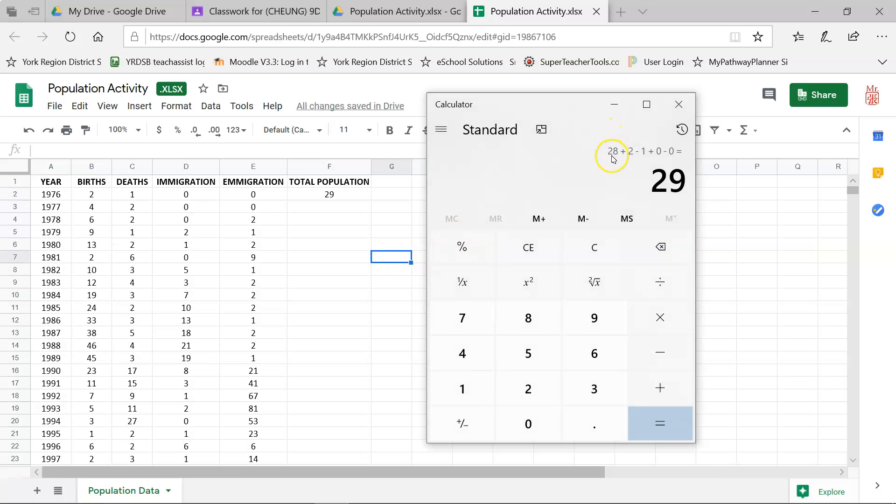Alright, so once again, we started off with 28 reindeer at the end of 1975. Two births, plus two. One death, minus one. Zero immigration, plus zero. Zero emigration, minus zero. We end up with 29. If I want to find out how many reindeer I have at the end of 1977, I'm going to take my 29 and do this. Plus four births. Minus two deaths. And of course, plus zero immigration, minus zero emigration. But in the end, you get 31.